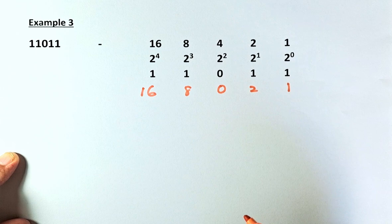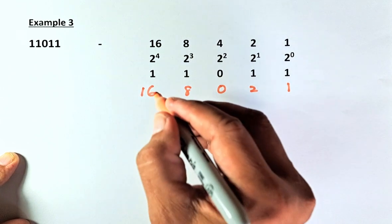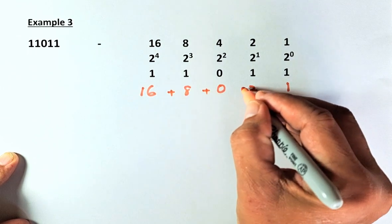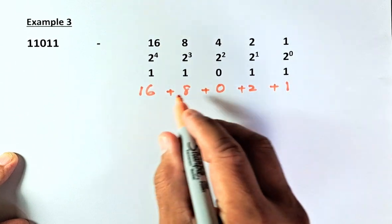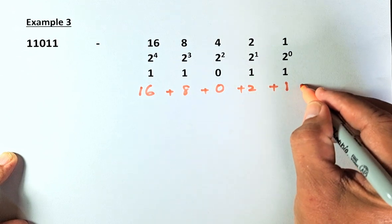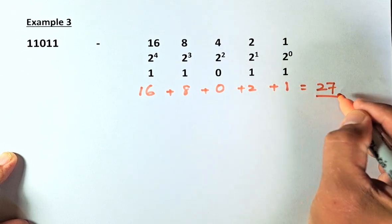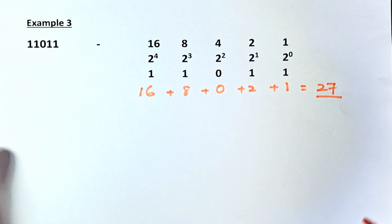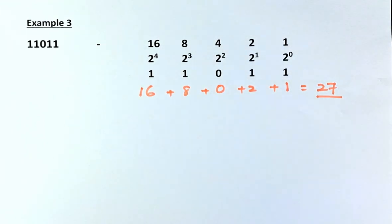Last but not least, we are going to add the numbers: 16 plus 8 plus 0 plus 2 plus 1. 16 plus 8 is 24, 24 plus 2 is 26, plus 1 — and the answer for 11011 is 27. Hope you got a feel of it. Have a go at more examples, and I'll see you in the next one. Cheers everyone, and have a good day.